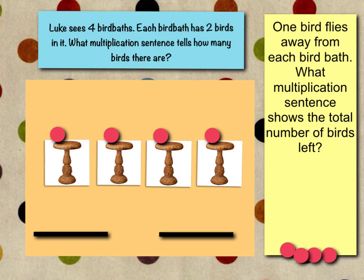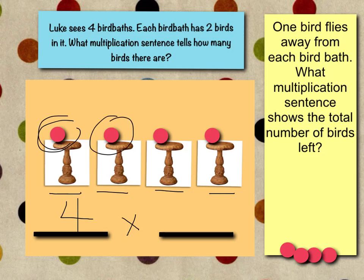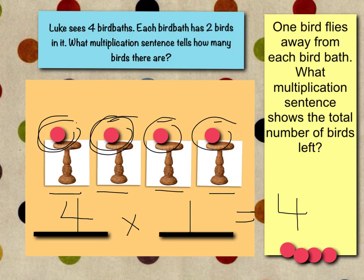So what is the multiplication sentence to show the number of birds left? First I need to say how many bird baths I have — one, two, three, four bird baths. I still have four bird baths. But now, what am I multiplying by? How many birds are in each bath? One in each. How many are in each bird bath? One. So four times one equals — and our total is one, two, three, four. So four times one equals four.